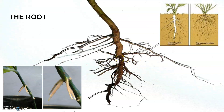In monocotyledonous plants, the primary root is short-lived and is replaced by a large number of roots. These are fibrous roots and this type of roots originate from the base of the stem, constituting the fibrous root system. In some plants like grasses, Monstera and banyan tree, roots arise from parts of the plant other than the radicle and they are called adventitious roots.